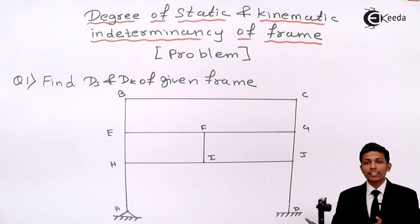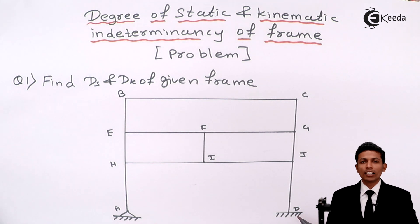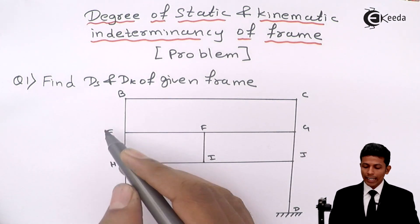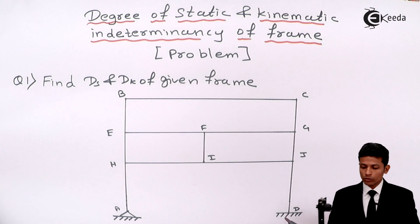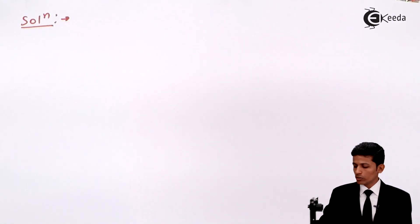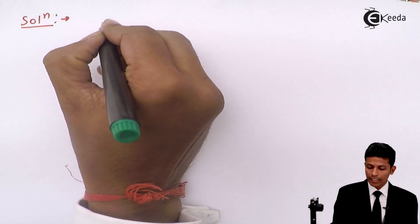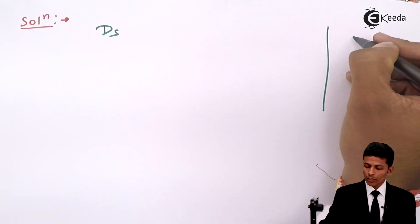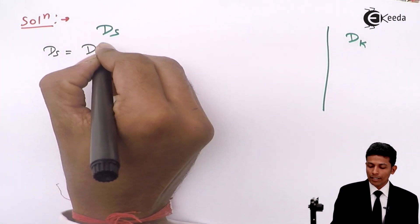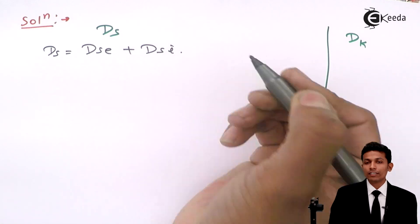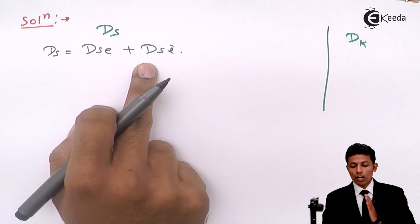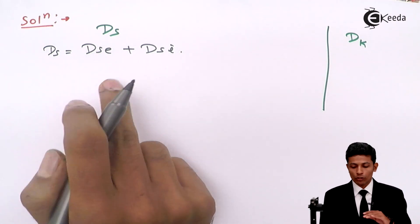We have to find DS and DK of the frame. Note: neglect axial deformation — this sometimes appears in exams. Now, the diagram is given. Let's start the solution. DS is split into two parts: DS = DSe + DSi. This is the formula.